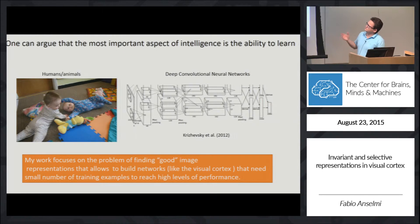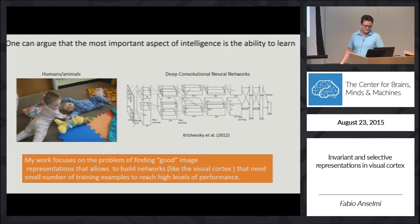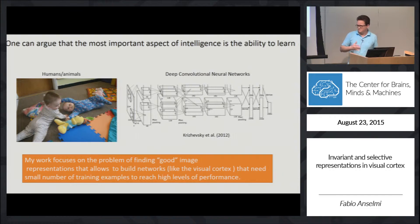I start with an observation that one can argue that one of the most important aspects of intelligence is the ability to learn. However, if we look at the state-of-the-art algorithms, for example in object recognition — so humans and animals on one side, and deep convolutional neural networks on the other — one of the main striking pieces of evidence, which we were discussing yesterday, is that the way of learning is pretty much different. One needs a lot of examples; the other one does not.